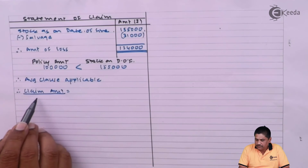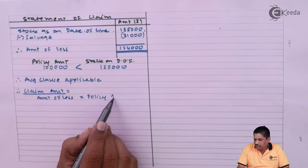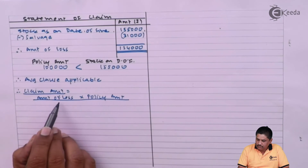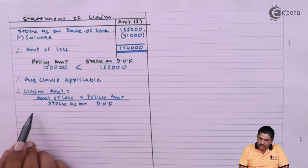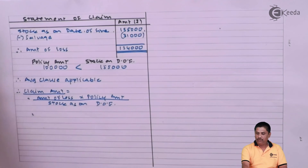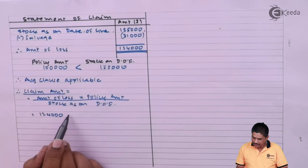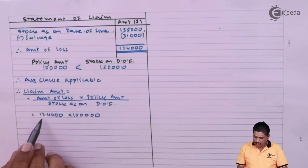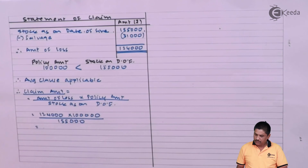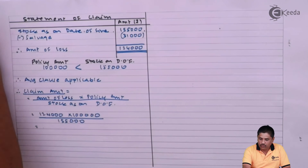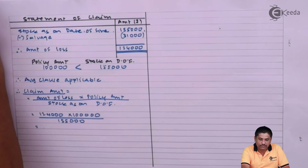Since the average clause is applicable, the claim amount is calculated as: Claim = Amount of Loss × Policy Amount / Stock as on Date of Fire. That is 1,24,000 × 1,00,000 ÷ 1,55,000 = 80,000. So your amount of claim is Rs. 80,000.